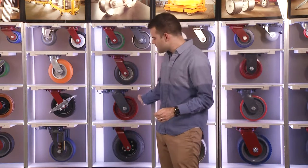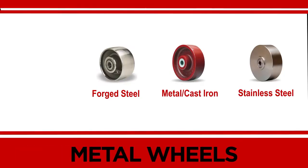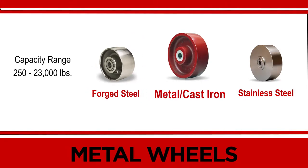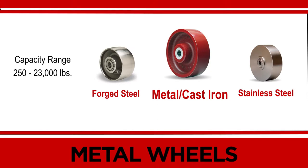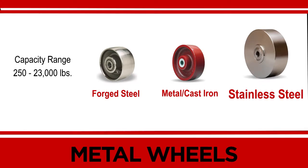Metal wheels are manufactured in three types of metal. Forged steel is the highest capacity wheel you can find. Cast iron wheels are inexpensive compared to forged steel, but the carrying capacity is lower. For heavy loads in wash-down and other corrosive environments, stainless steel wheels are ideal.